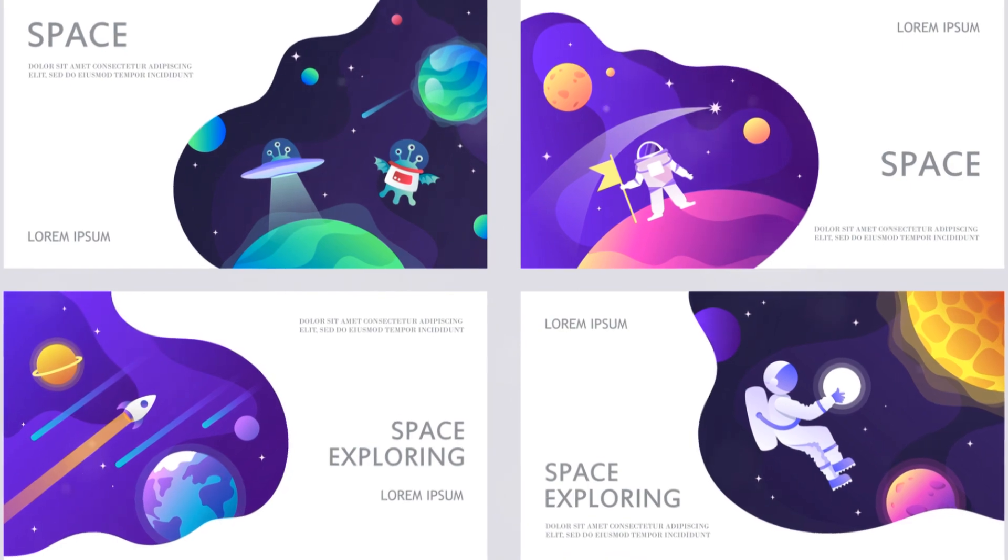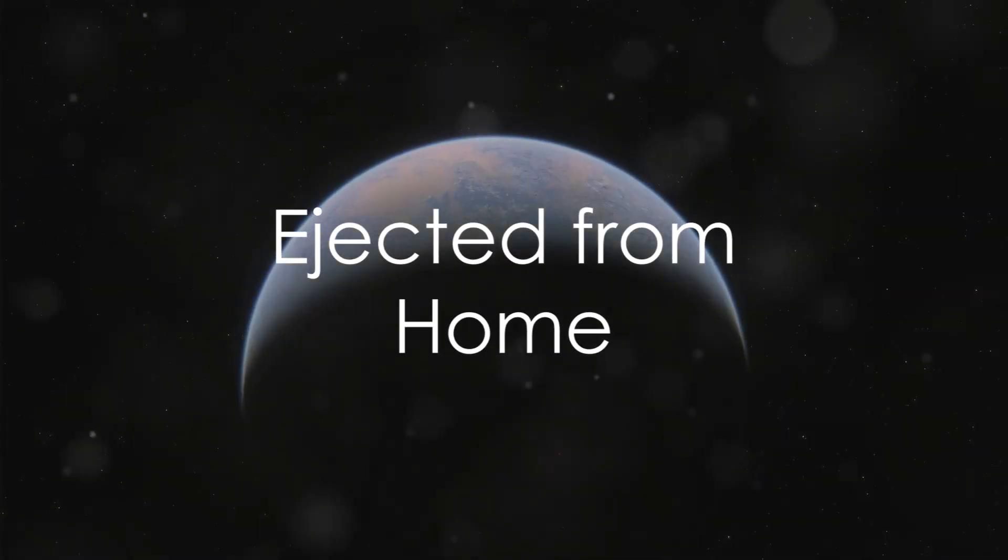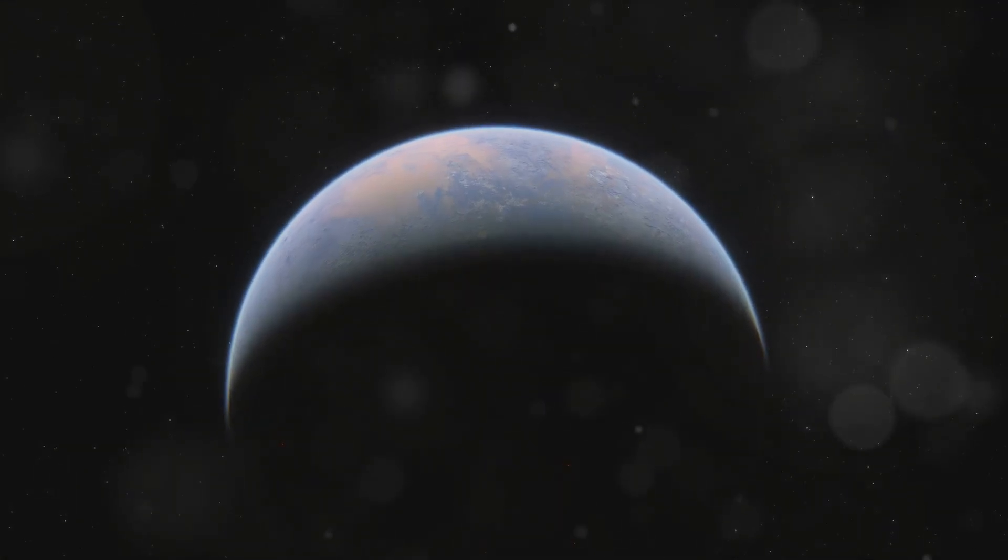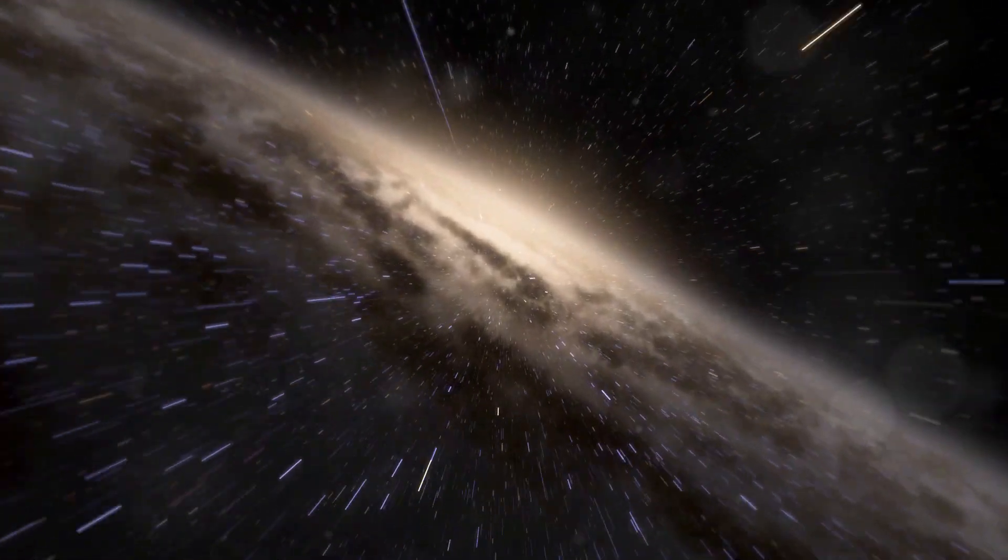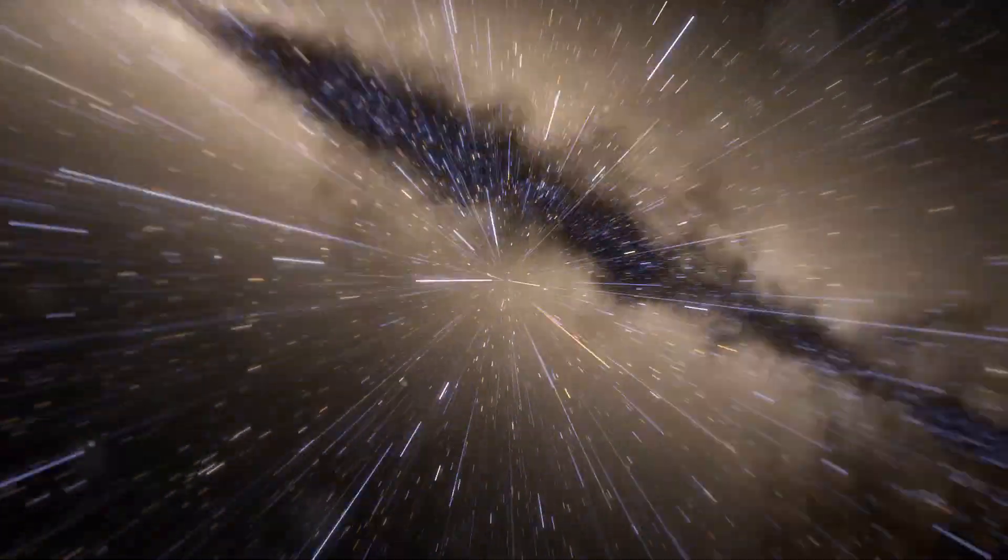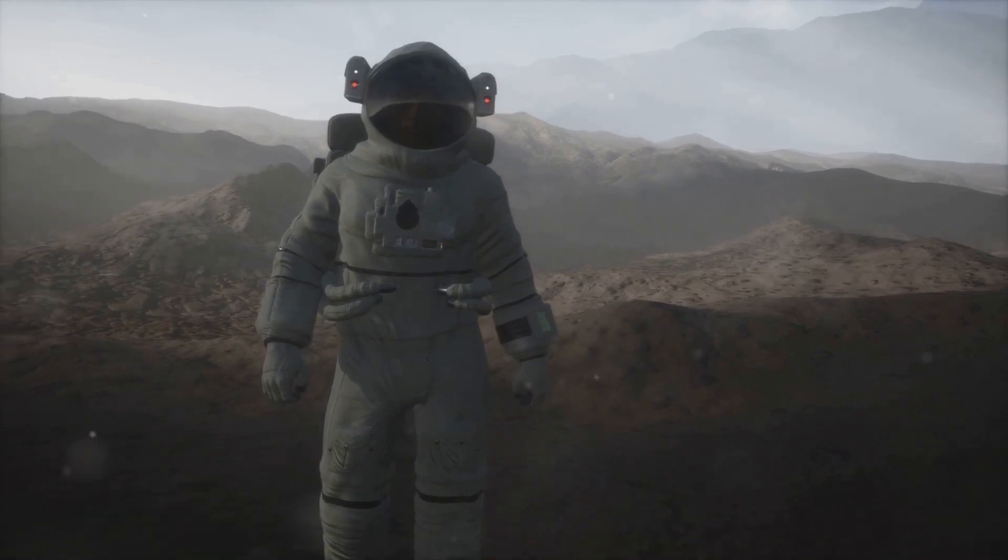Rogue planets are not born wanderers. They likely form in the same way as other planets, from the swirling disks of gas and dust that surround young stars. So how do they end up alone in the vastness of space? The answer lies in the chaotic nature of planetary system formation.